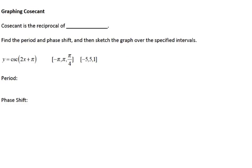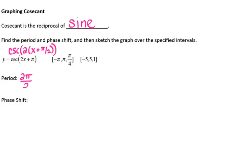Graphing cosecant — cosecant is the reciprocal of sine. Inside the trig function we have a 2, so I'm going to factor it out just like we did with sine and cosine. That becomes 2 times (x plus π/2). The reason to factor out the 2 is to figure out the phase shift. The period is 2π divided by b, and b is 2, so 2π divided by 2 is π.